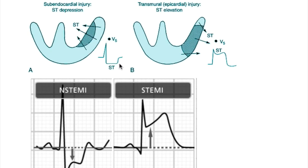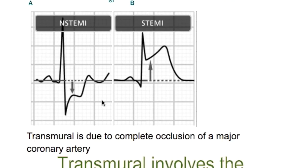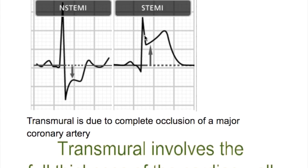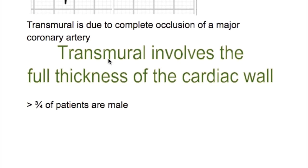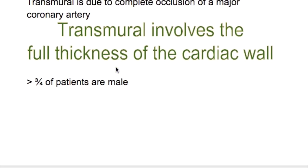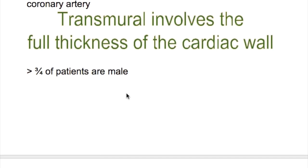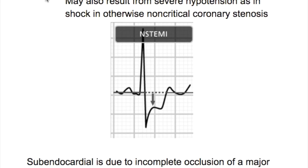There are two types of myocardial infarction: ST-elevated (STEMI) and non-ST-elevated (NSTEMI). ST elevation is transmural and is due to complete occlusion of a major coronary artery. Transmural infarction involves the full thickness of the cardiac wall.